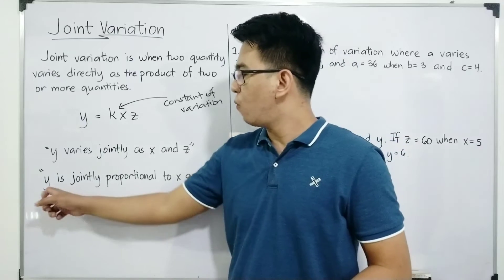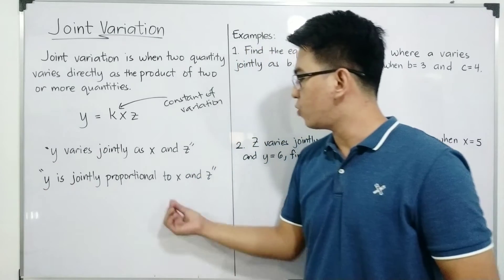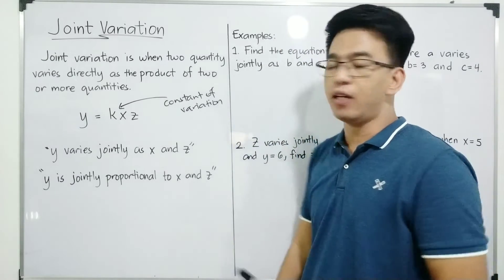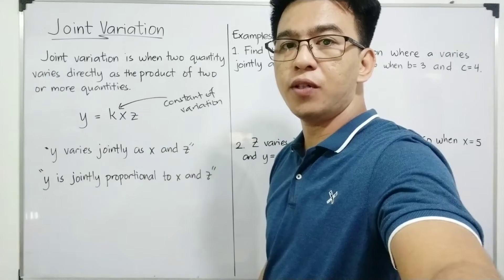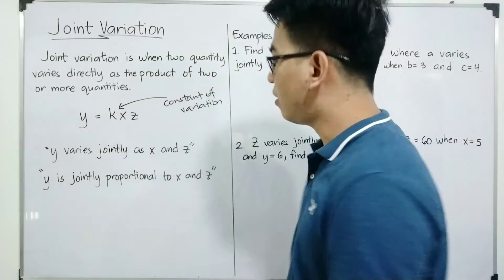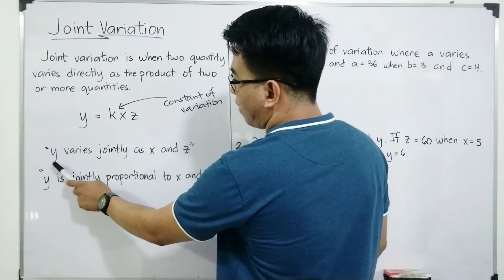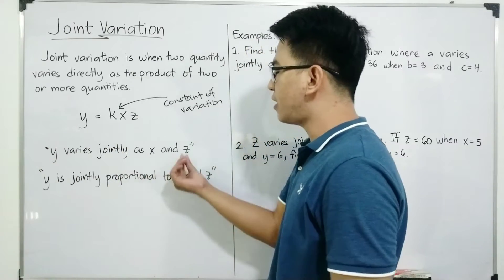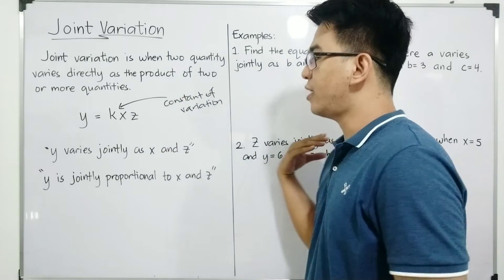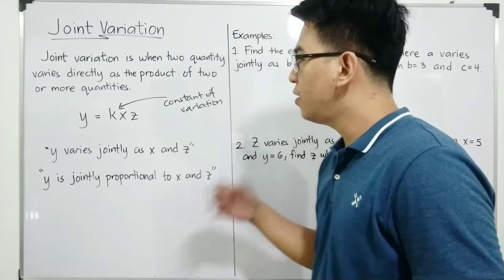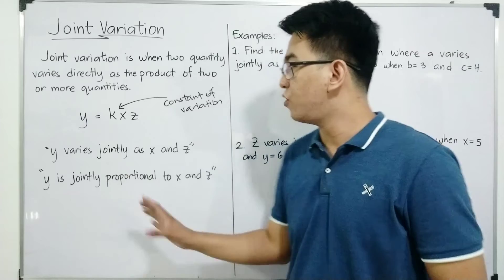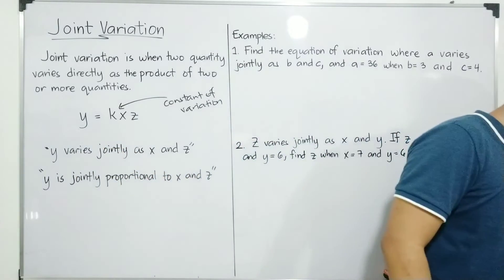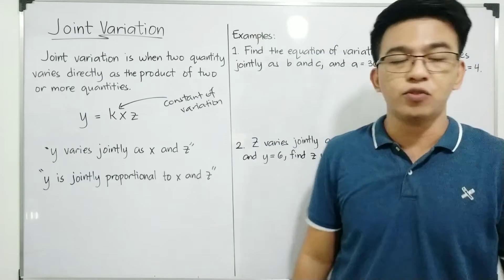Another phrase is 'y is jointly proportional to x and z.' The pattern here is: you focus on the first variable mentioned — that one is isolated on one side. Then 'jointly as x and z' — those become the companions of your constant of variation k. Here are examples of joint variation using this general formula. Now, to help you understand joint variation well, I have two problems for us to solve.